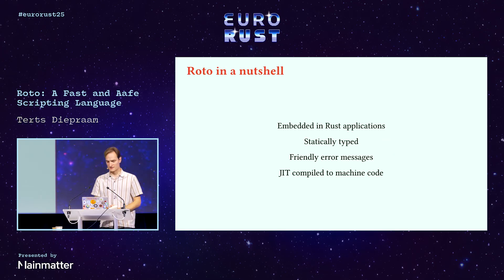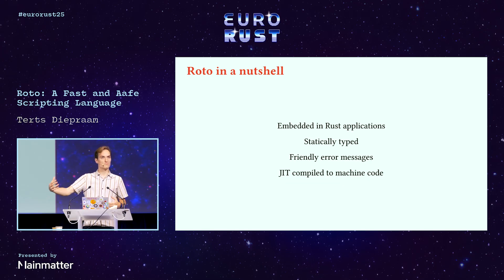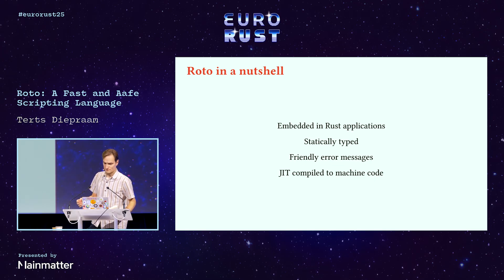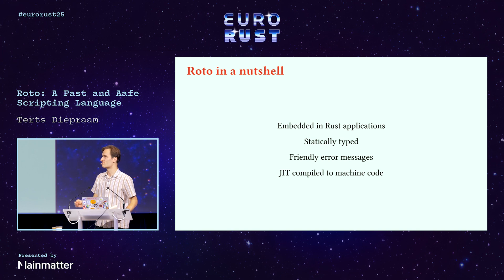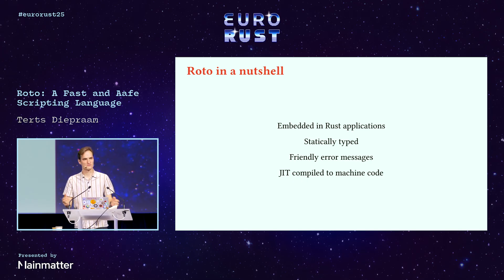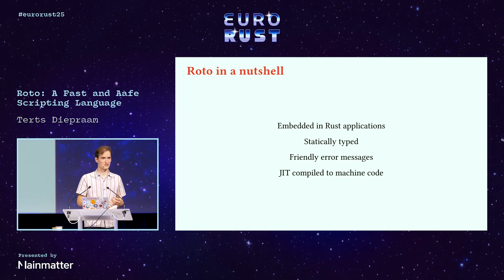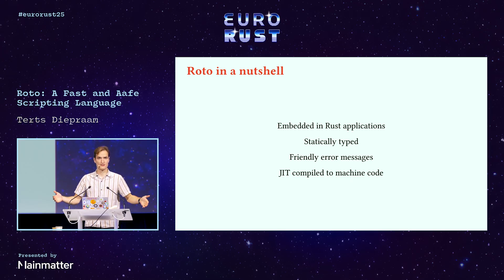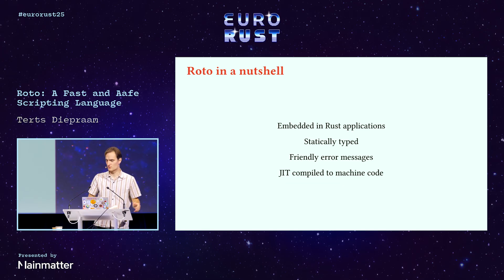Roto in a nutshell: it is embedded in a Rust application, so you build your Rust application and then you can expose bindings to Roto to make your application scriptable. It is statically typed, unlike most other scripting languages such as Lua. It features friendly error messages — we put a lot of time into making those really nice. And it is sort of JIT compiled to machine code — we compile the whole script beforehand and then run it, not first interpreting and then optimizing hot paths.